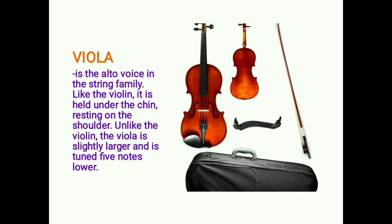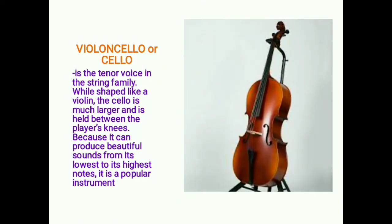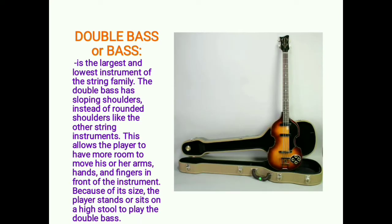The viola is the alto voice in the string family. Like the violin, it is held under the chin resting on the shoulder. Unlike the violin, the viola is slightly larger and is tuned five notes lower. The violoncello, or cello, is the tenor voice in the string family. While shaped like a violin, the cello is much larger and is held between the player's knees. Because it can produce beautiful sounds from its lowest to its highest notes, it is a popular instrument.